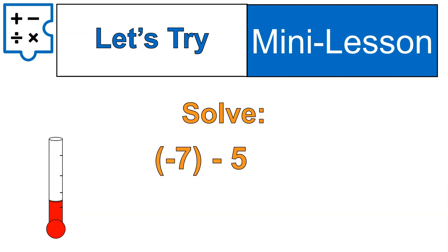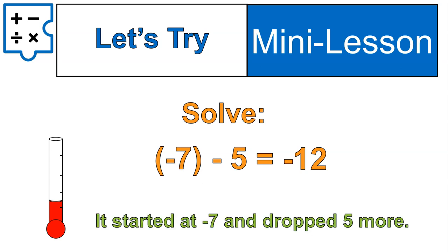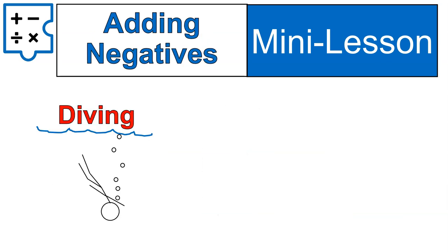Now let's try to solve a question that looks similar. Negative 7 minus 5 — how would you solve that? Did you get negative 12? We had negative 7, we subtracted 5, now we have negative 12. It started at negative 7, it dropped 5 more, now it's at negative 12. And that's how we solve this type of question.